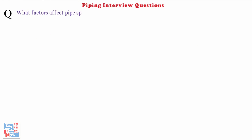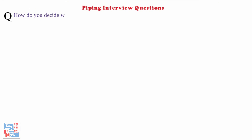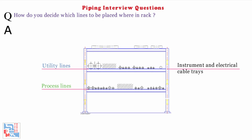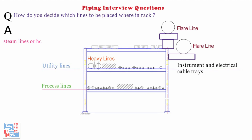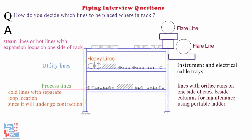Next: What factors affect the pipe span? Factors affecting pipe span are size, schedule (i.e., thickness of pipe), liquid or vapor, and insulated or bare pipe. Next: How do you decide which lines to be placed where in a rack? Process lines on lower level, utility lines on top level, instrument and electrical cable trays on utility level or separate topmost level, heavy lines near column, flare lines outside the rack on cantilever beams or inside rack above top level, steam lines or hot lines with expansion loop on one side of rack, besides column for maintenance using portable ladder. If we have cold lines and hot lines running on same rack, we have to plan their loop locations separately as hot lines will have expansion and cold lines undergo contraction.